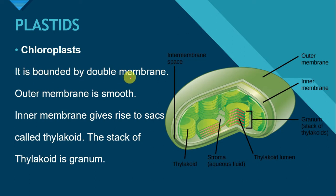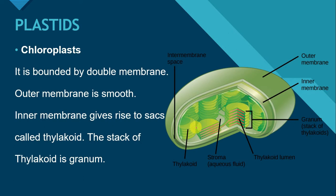Chloroplast is bounded by a double membrane. The outer membrane is smooth, while the inner membrane gives rise to sacs called thylakoids. The stack of thylakoids is called a granum. Looking at the diagram of a chloroplast, the outer membrane is smooth while the inner membrane forms the thylakoids — each round body visible in the diagram is called a thylakoid.